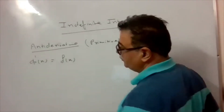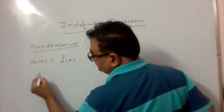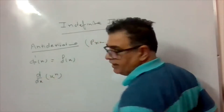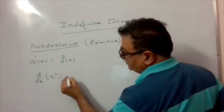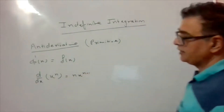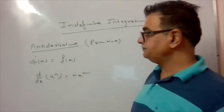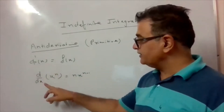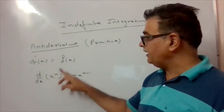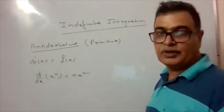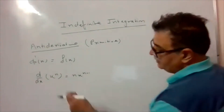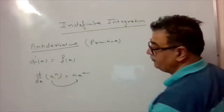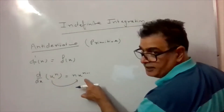Now what is the meaning of this? A simple example: take x^n. The derivative comes out to be n·x^(n-1). So the derivative of x^n is n·x^(n-1) — this is phi dash x, i.e., d/dx of x^n equals n·x^(n-1).